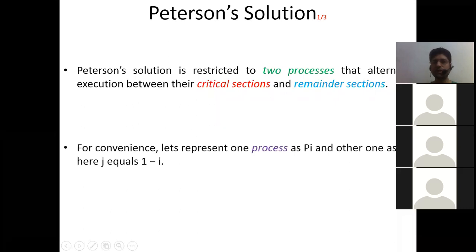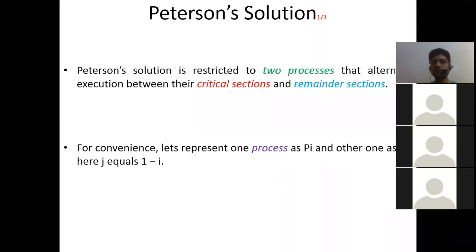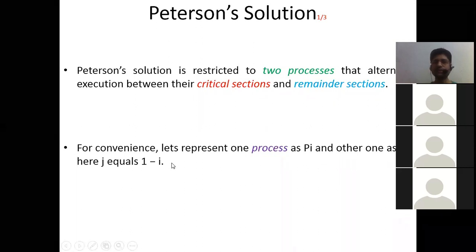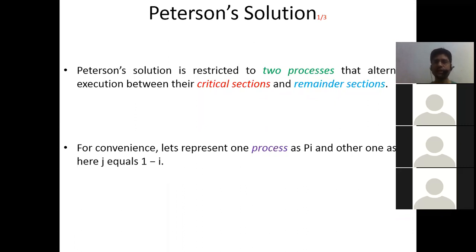For convenience in Peterson's solution, we present one process as Pi and the other as Pj, where j equals 1 minus i. So if i equals 0, then j equals 1, meaning we are talking about two processes P0 and P1. We are only concerned about these two processes in this solution.